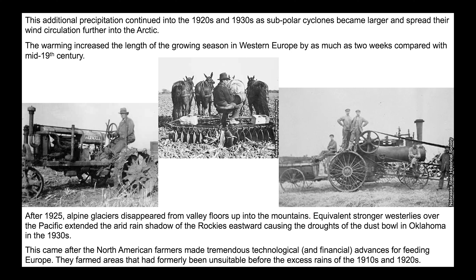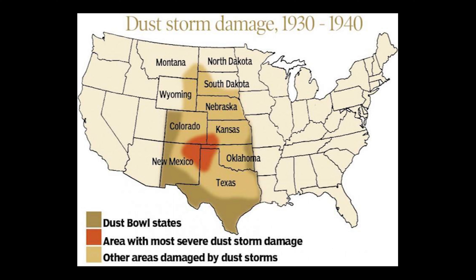In the US and Canada, because they weren't devastated by the war as Europe was, farmers saw this as a great opportunity. They took out loans, bought new fancy equipment, and got to work in the 1920s. After 1925, alpine glaciers began disappearing, moving up valley floors. Stronger westerlies over the Pacific ultimately played a major role in what happened to these farmers. As airflow became more zonal, less precipitation moved up from the Gulf of Mexico and the great plains and prairies dried out.